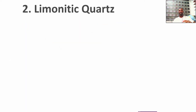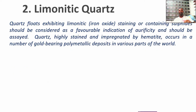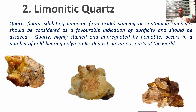The second variety is limonitic quartz. Limonitic quartz exhibits limonite — a kind of iron staining or iron oxide — and in some cases sulfide impregnation. Most have been impregnated by hematite. This actually occurs in many polymetallic deposits. When you see quartz exhibiting these kinds of stains, you need to follow it up.